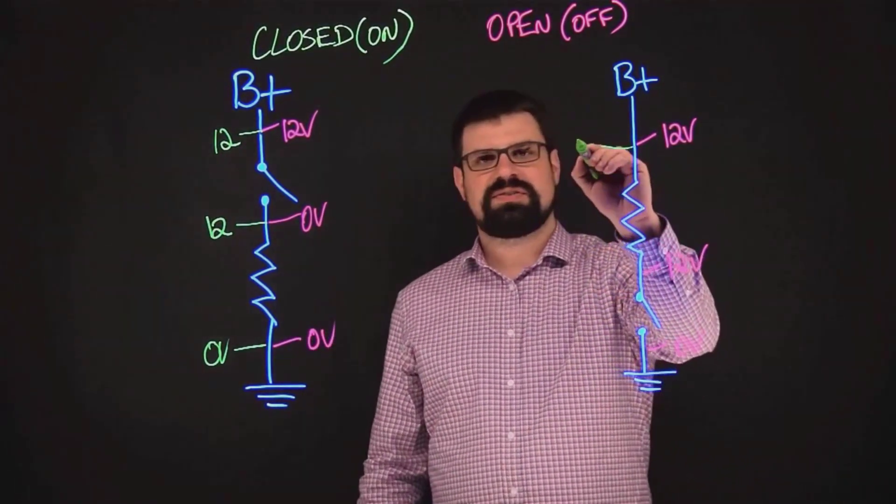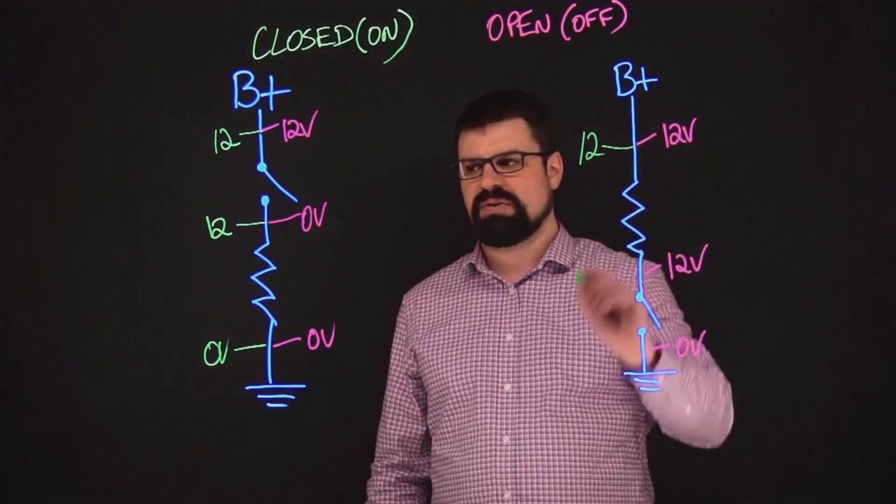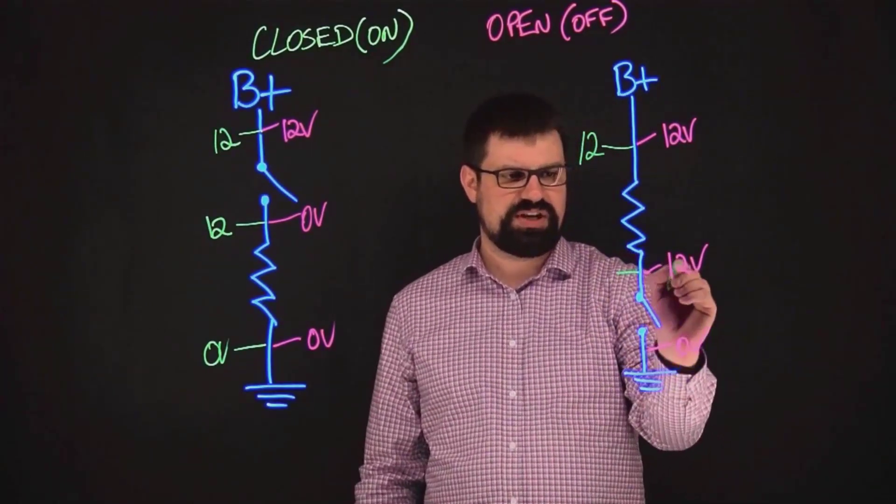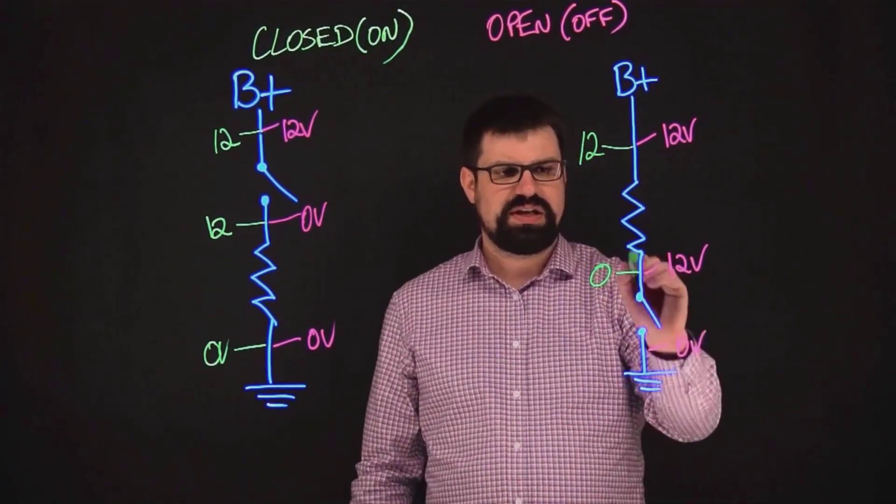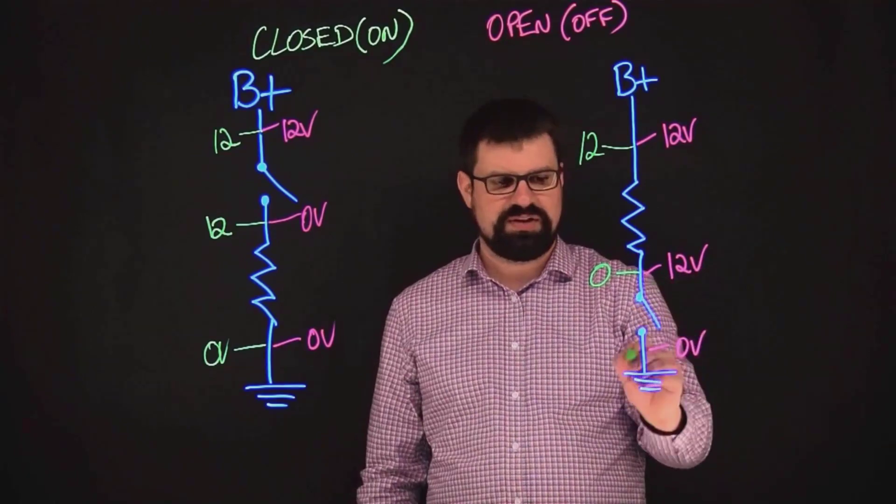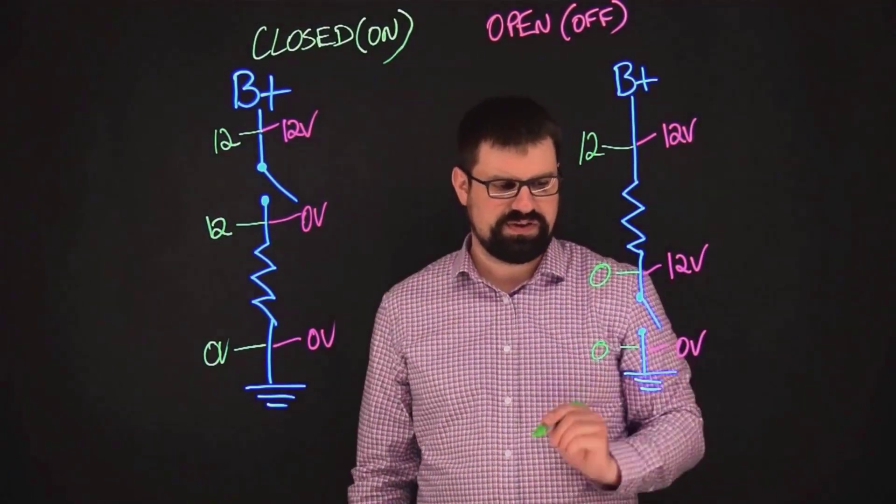Alright, over here, you're going to have 12 volts on the power side, but what's going to change is you're now going to have zero volts after the load with the switch closed. You're going to have ground. You still have ground all the time here.